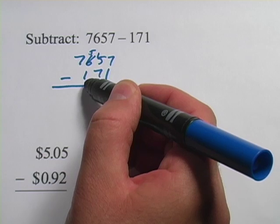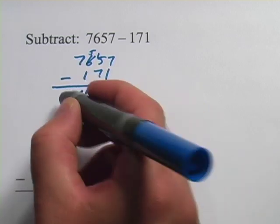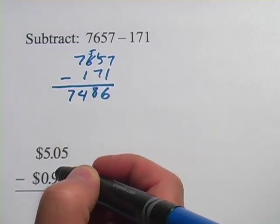And then over here we have 5 minus 1, that's 4. And the 7 is minus, well, there's nothing there, so we just bring the 7 down. And we have 7,486.